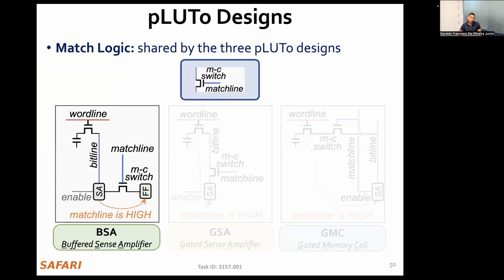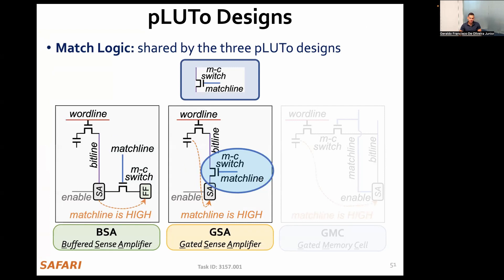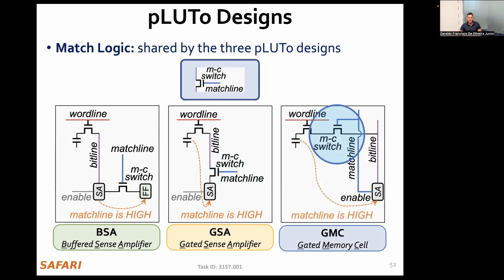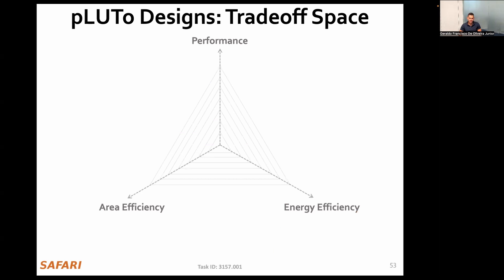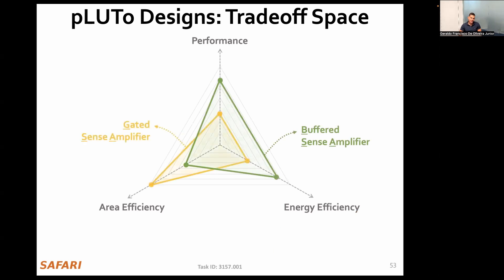Next, I'm going to talk about our Pluto designs. In this work, we implement three different designs to support Pluto lookup query operations, which mostly differ in how they handle the output vector. In the first design, output elements are latched in auxiliary flip-flops — we call this the buffered sense amplifier design. In the second design, we use the sense amplifier's internal buffer to latch the output elements — we call this the gated sense amplifier design. In the third design, we use the DRAM cells themselves to store the output elements — we call this the gated memory cell design. These three designs lead to different trade-offs: the buffered sense amplifier provides moderate performance, energy, and area efficiency; the gated sense amplifier provides the lowest performance but highest area efficiency; and the gated memory cell design provides the highest performance and energy efficiency at the cost of lower area efficiency. We conclude that Pluto designs cover a broad design space.